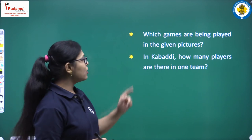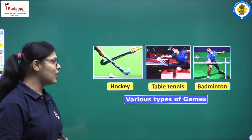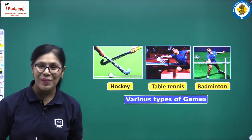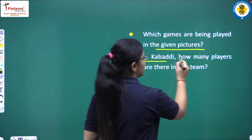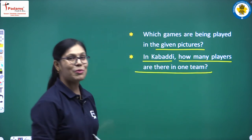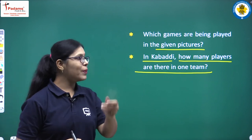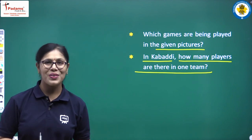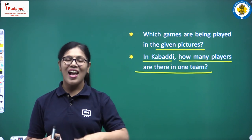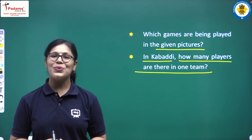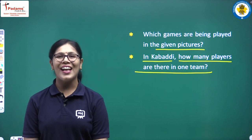There are a few questions based on these pictures. The first is: which games are being played in the given pictures? The answer is hockey, table tennis, and badminton. The second question is: in Kabaddi, how many players are there in one team? Kabaddi is a very famous game in our country. Try to find the answer, and if you cannot, I will tell you in our next class. This was all for today's class — we will meet in our next class with part 2 of this chapter. Thank you for watching.